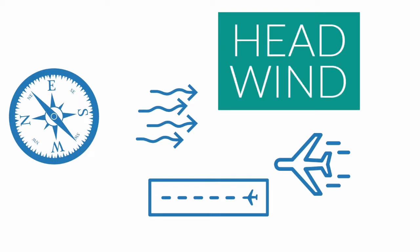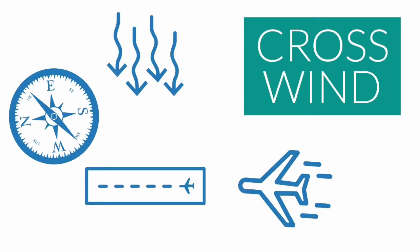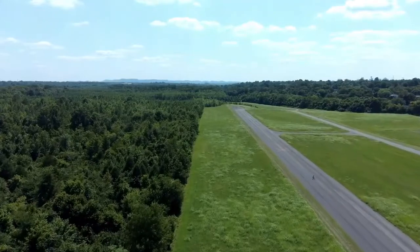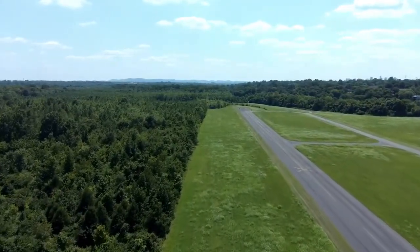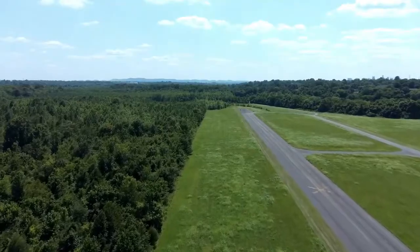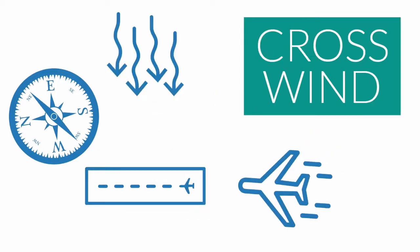Now let us understand crosswind. For example, if you are traveling towards north and the direction of wind is from the east or west — which is perpendicular to the direction of travel — then that wind is called crosswind. So headwind is against the direction of travel, and crosswind is perpendicular to the direction of travel.